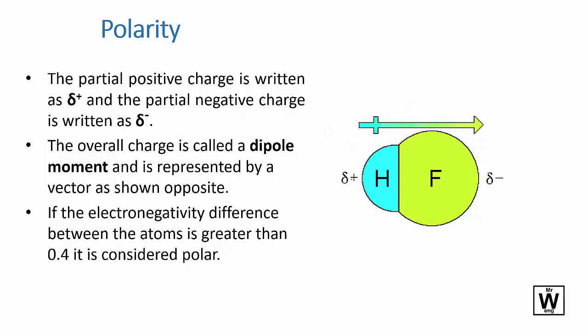And this is how we draw whether they're polar or not. We put a small Greek letter delta positive, delta negative, and then we do an arrow with a plus there. So this side is plus and electrons have gone over to this side, so this is negative.